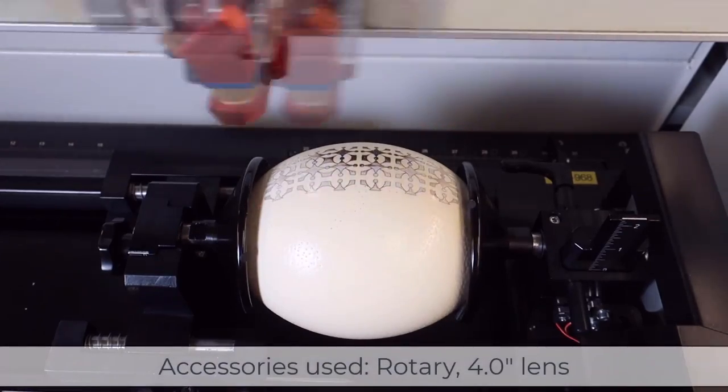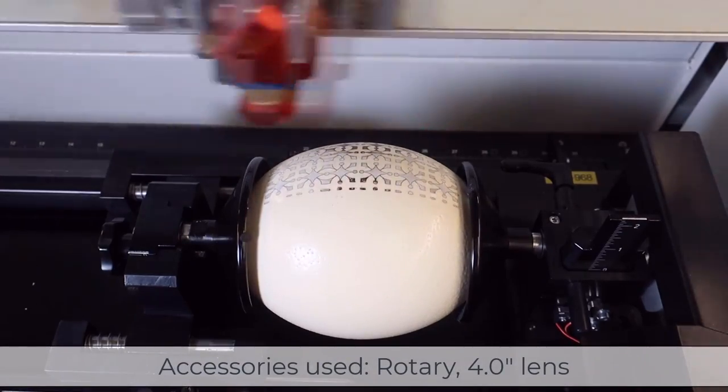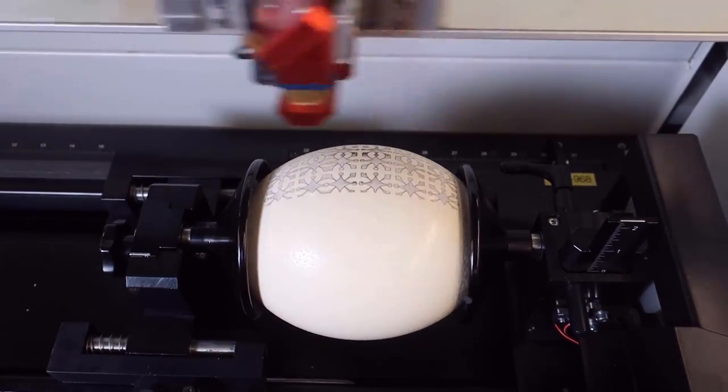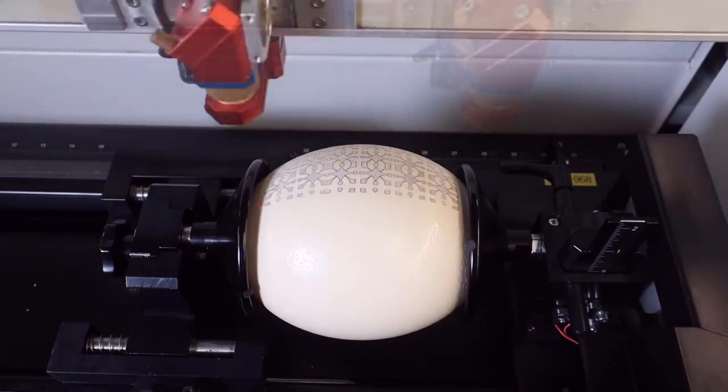As you can see we had our focus slightly incorrect on our first pass resulting in some black spotting on the surface of the egg. To correct that we've adjusted the Z height while still engraving until we could locate the exact result we're looking for.